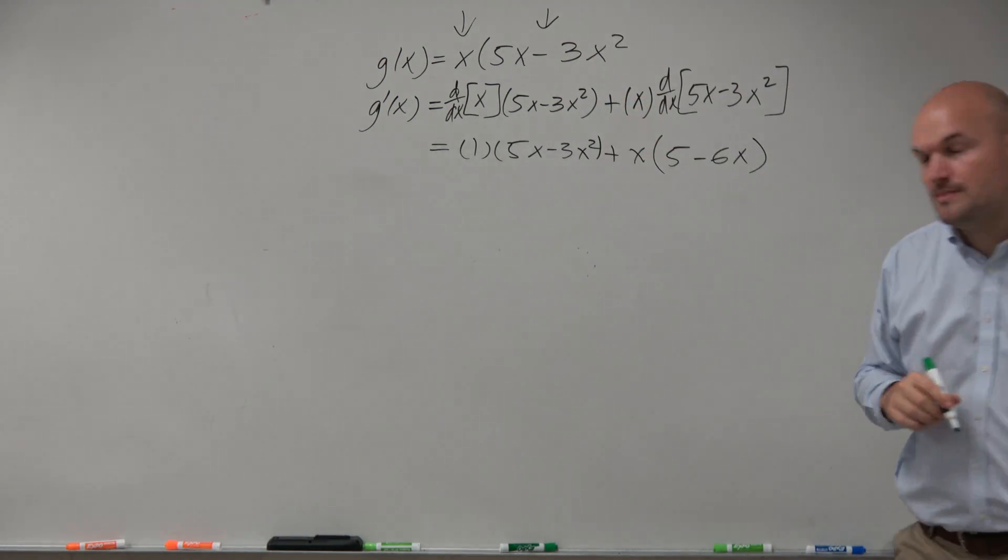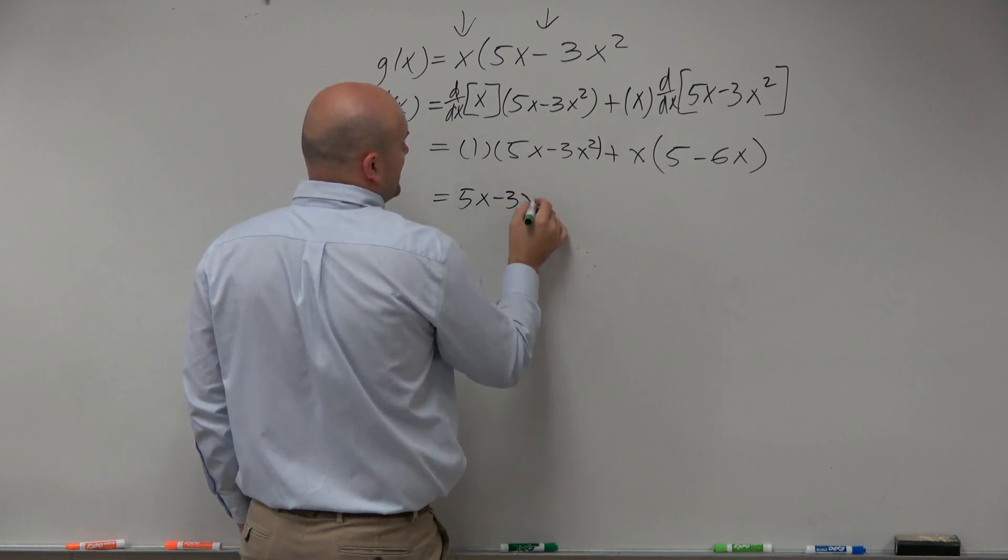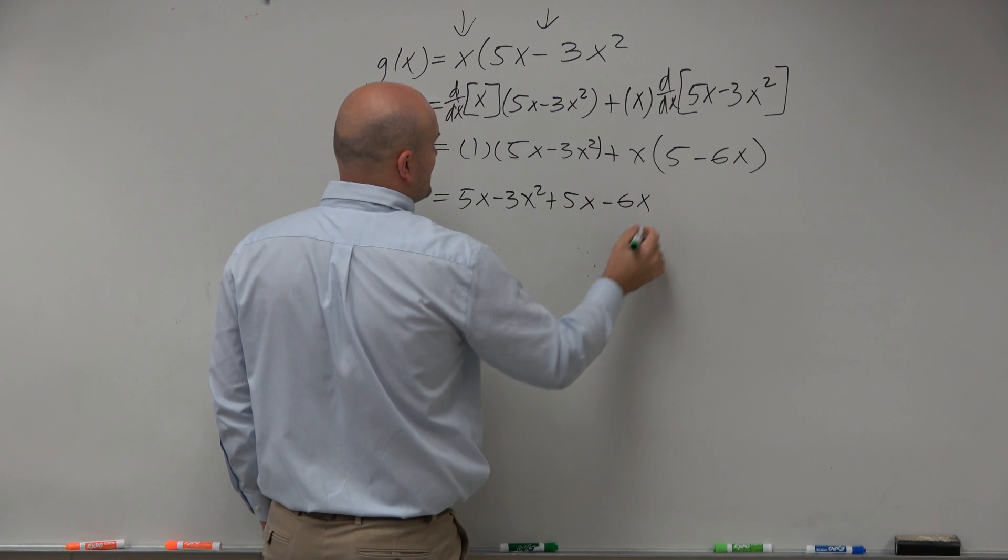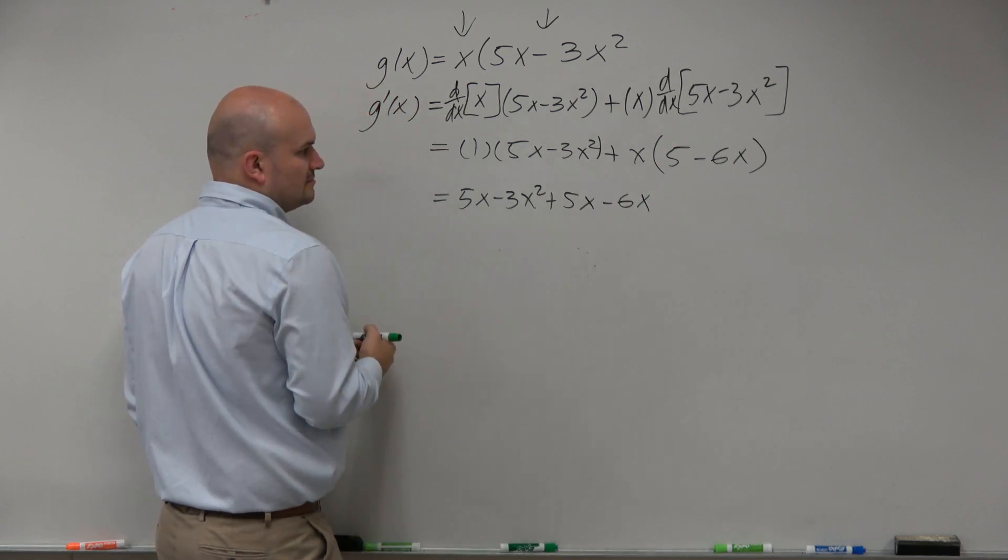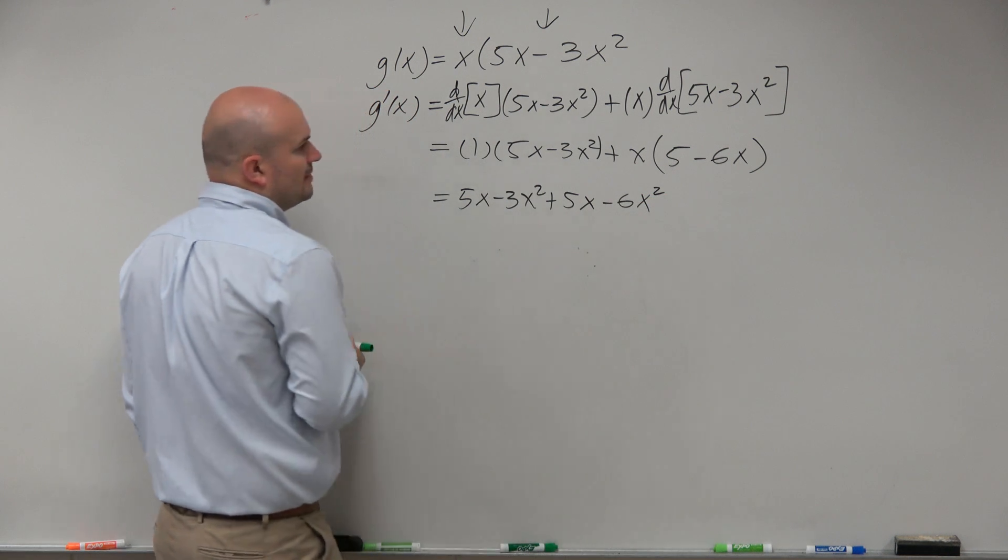Now, we can just go ahead and simplify to give us 5x minus 3x squared plus 5x minus... Sorry. So, therefore...